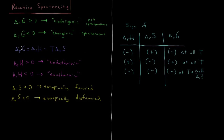You'll see that if delta G equals zero, then delta H equals T times delta S, so T equals delta H over delta S, where the reaction is at equilibrium. At temperatures below that, the enthalpy is going to win; at temperatures above that, the entropy wins. So it's only at low temperatures where those reactions are spontaneous.